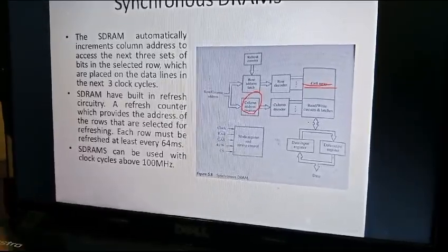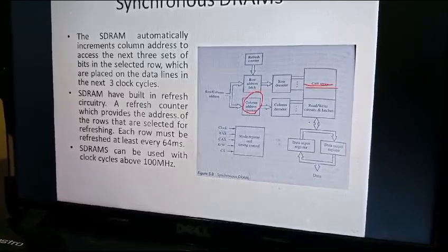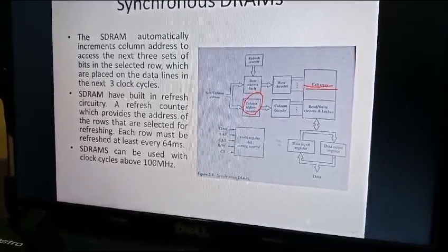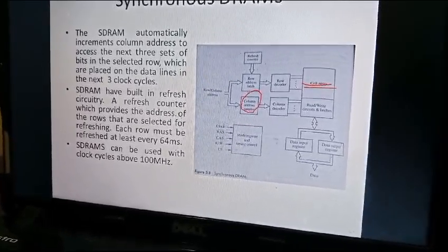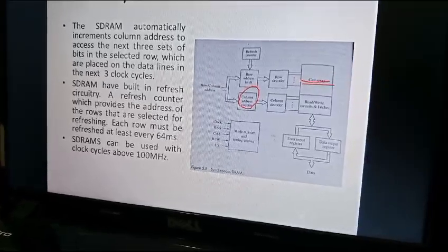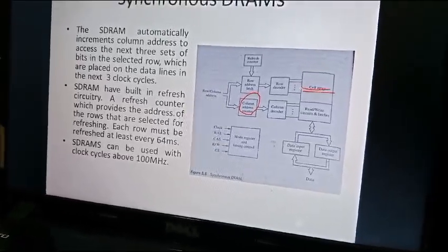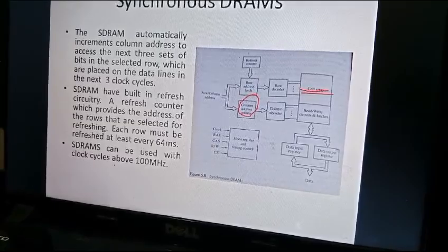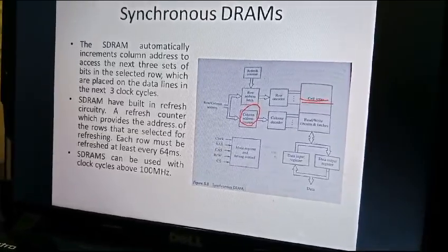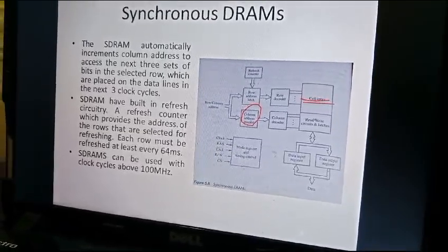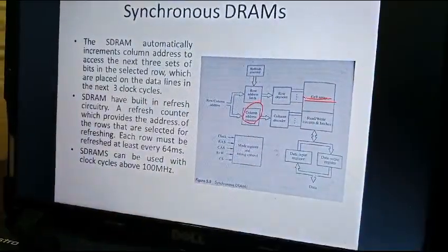That circuit is called refresh circuitry. Usually it happens one row at a time - they will refresh one row at a time. Each row must be refreshed at least every 64 milliseconds. SDRAMS can be used with clock cycles of 100 megahertz.